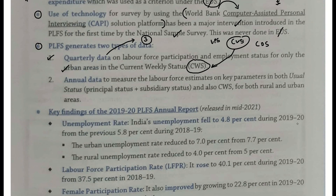Annual data — har saal — to measure the labor force estimates on key parameters in both usual status — phir chahe woh Usual Principal Status ho ya phir woh Usual Subsidiary Status ho — plus CWS ko bhi use kiya jaata hai. Aur yeh cheez kyunki annual basis par nikal rahe hain, toh dono areas ke liye — rural areas mein bhi, urban areas mein bhi.